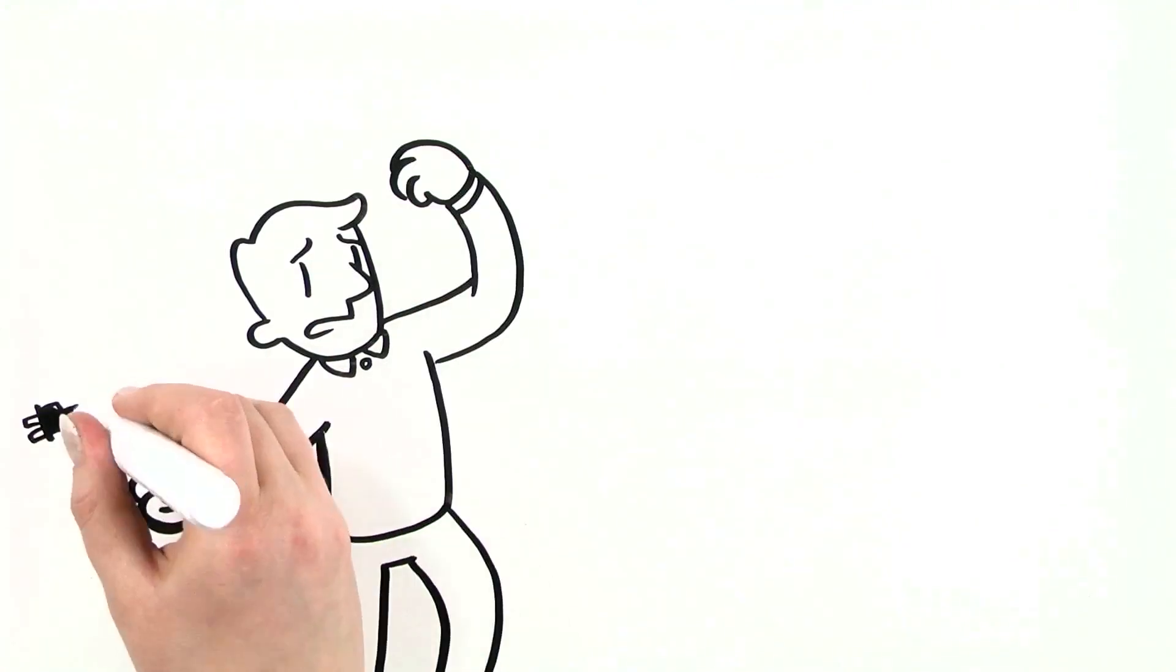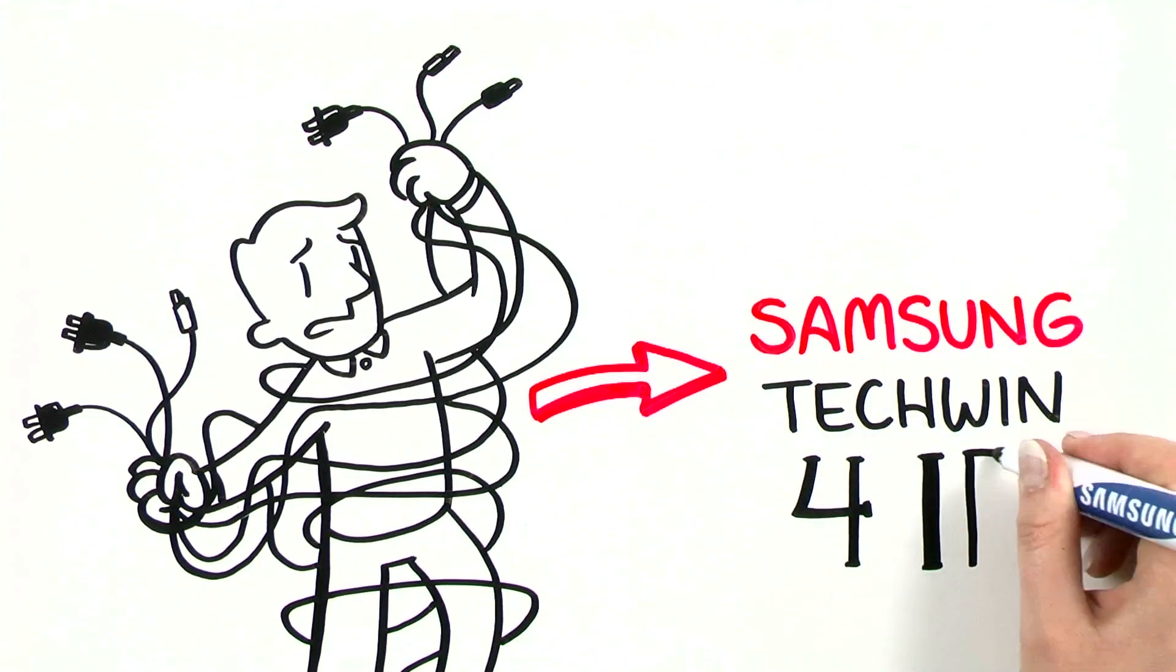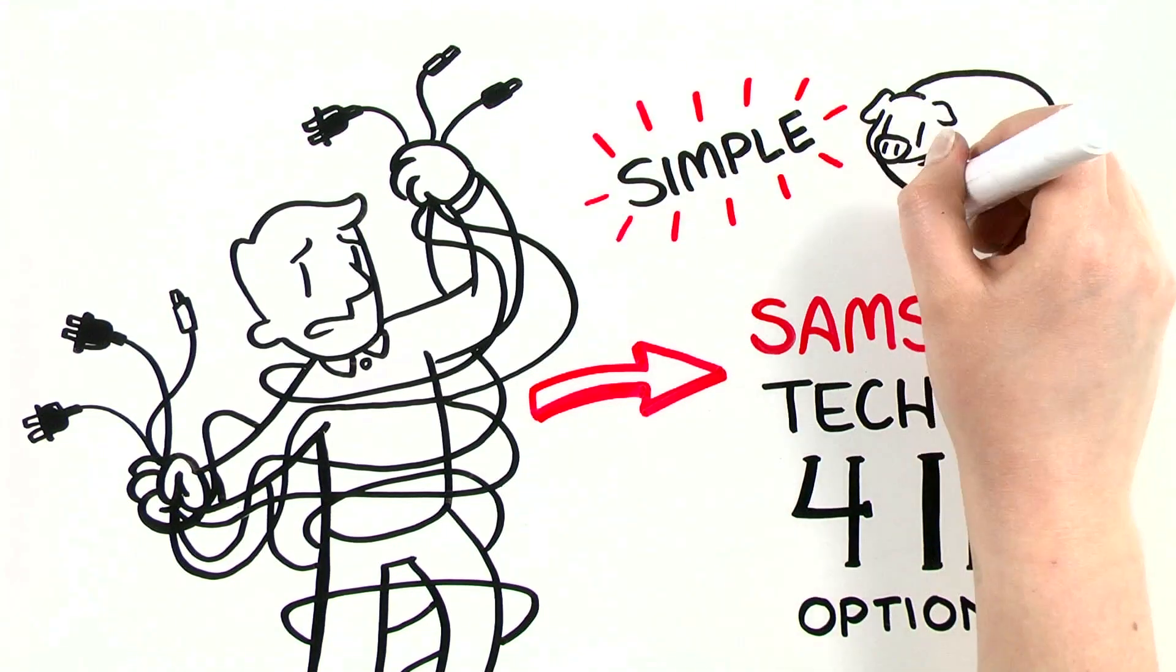Forget cumbersome installations and complicated systems. Choose from Samsung Techwin's four new IP kit options for a simple, affordable transition.